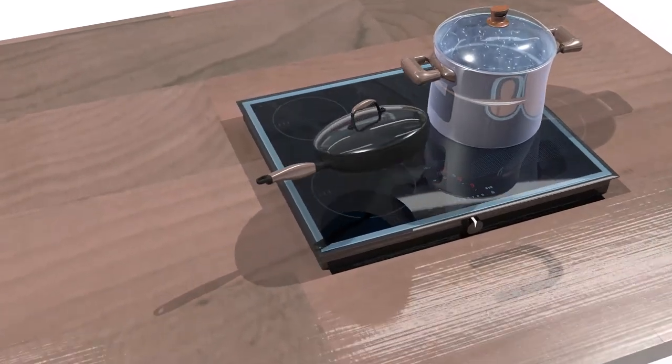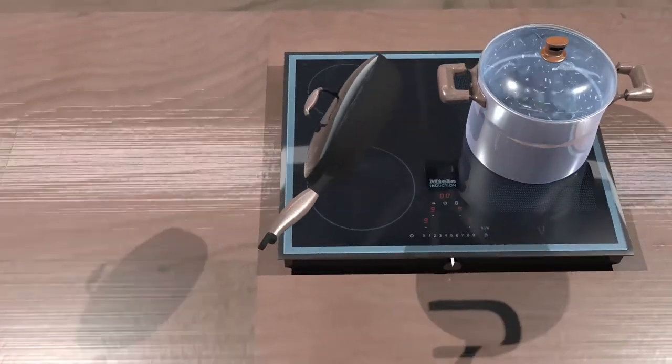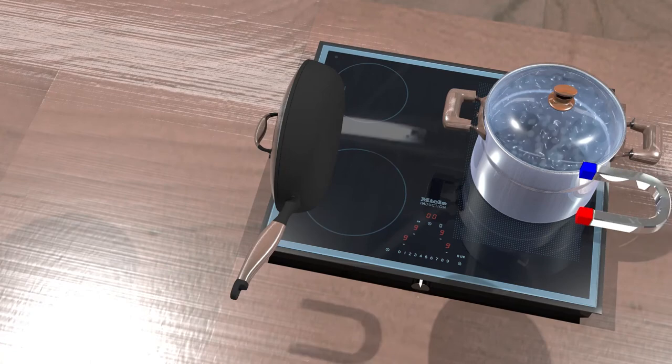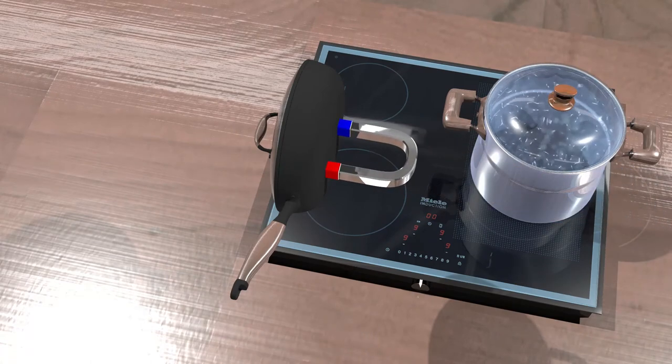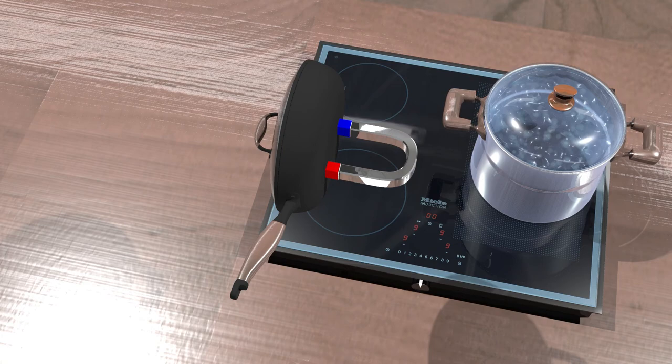To find out whether your pan can be used with an induction cooktop, turn the pan over and hold a magnet to the bottom of the pan. It will be compatible only if the magnet holds firmly to the pan.